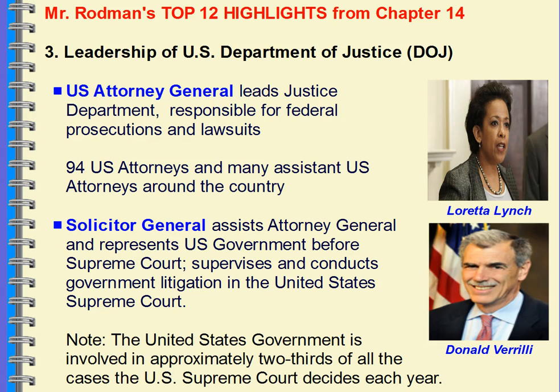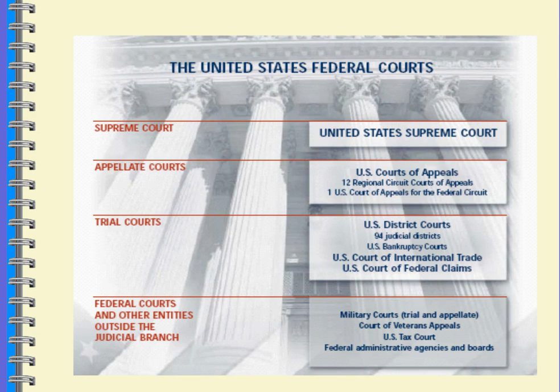The Solicitor General is the individual who actually represents the government before the court — the third person in charge under the Attorney General and Deputy Attorney General at the DOJ. The Solicitor General argues cases before the court. If it's a case being argued before the Supreme Court, that would be the Solicitor General. They can also file an amicus brief on behalf of a case they're arguing. Keep in mind the U.S. government is involved in almost two-thirds of cases the Supreme Court hears, so the Solicitor General is arguing before the court many times.